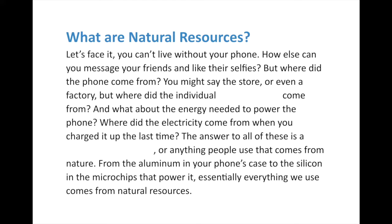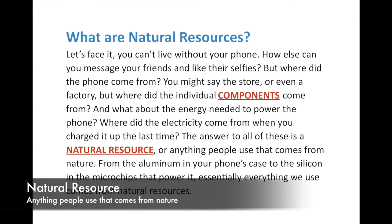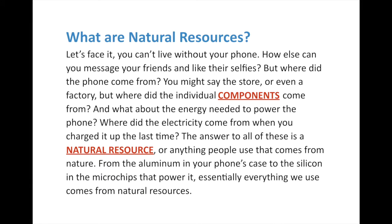You can't live without your phone — how else can you message your friends and like their selfies on social media? But where did that phone come from? You might say the store, or a factory. But where did the individual components come from? And what about the energy needed to power your phone — where did the electricity come from when you last charged it? The answer to all of these questions comes from natural resources, or anything that people use that comes from nature. Anything from minerals to the sun to flowing water to food — everything essentially boils down to natural resources. From the aluminum in your phone's case to the silicon in the microchips that power it, to the coal, natural gas, or even nuclear power that powers the power plant — everything we use comes from natural resources.